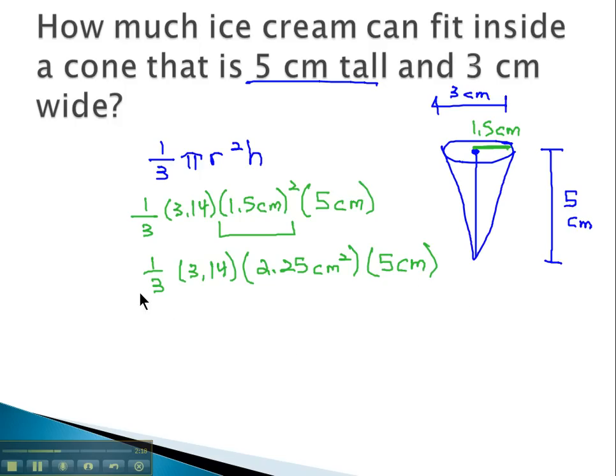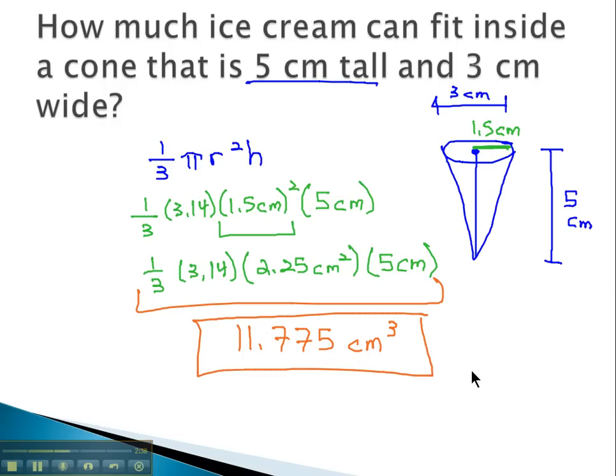Since this is all multiplication and division, we can finish by going across one-third, or 1 divided by 3, times 3.14, times 2.25, times 5. We get our final volume of 11.775 centimeters cubed. We have 2 and 1 more, gives us centimeters cubed.